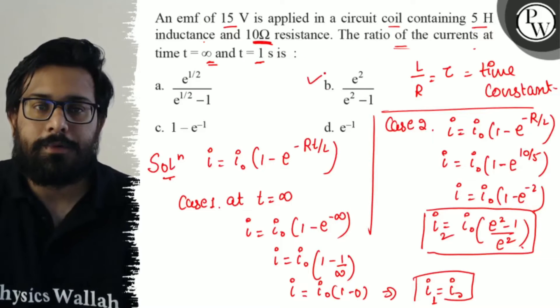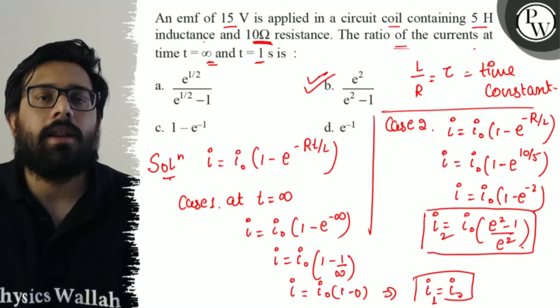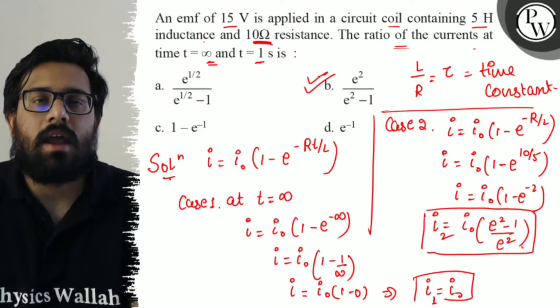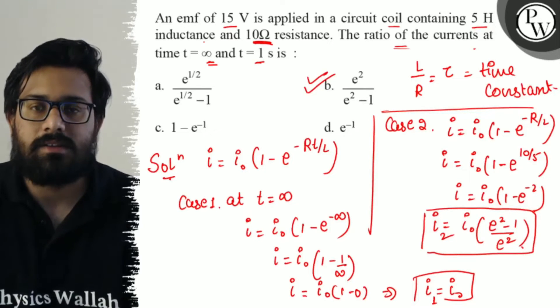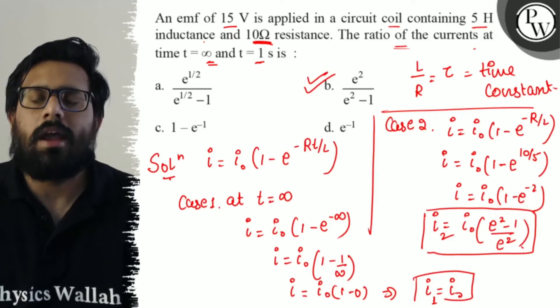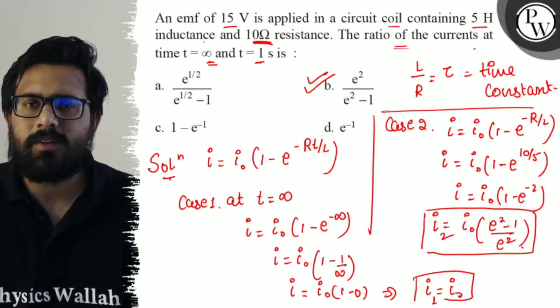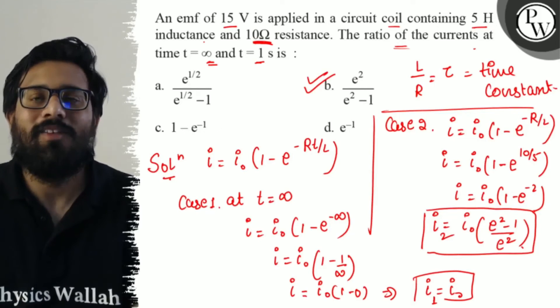So option B is absolutely correct — e square upon e square minus 1 is the right answer. I hope you got the concept of this question. All the very best.